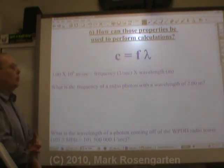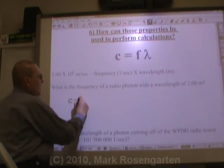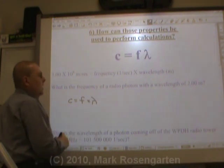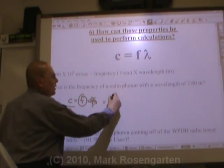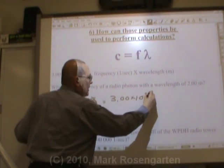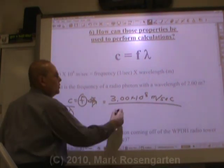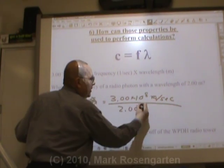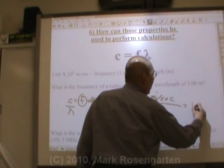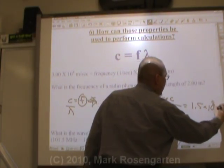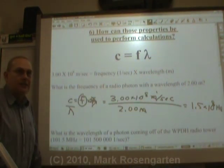What is the frequency of a radio photon with a wavelength of 2.00 meters? c equals frequency times wavelength. If we're trying to find frequency, we divide both sides by wavelength, and we get 3.00 times 10 to the 8th meters per second divided by the wavelength of 2.00 meters. Meters cancel and leave us with 1 over seconds: 1.5 times 10 to the 8th hertz.